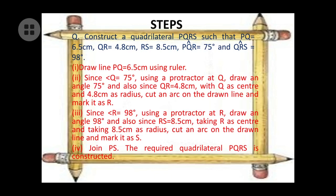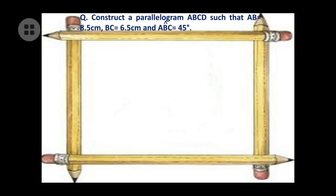Now let's move to the parallelogram. The question is: construct parallelogram ABCD where AB = 8.5 cm, BC = 6.5 cm, and angle B = 45 degrees. Only two sides and one angle are given, so you must use the parallelogram property — opposite sides are equal — while drawing.